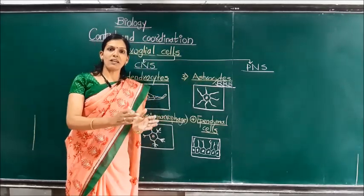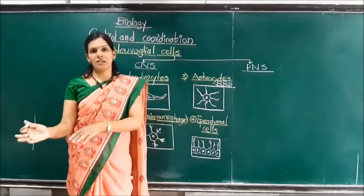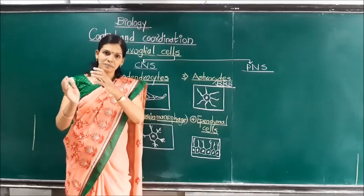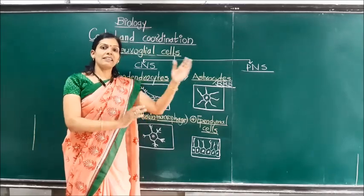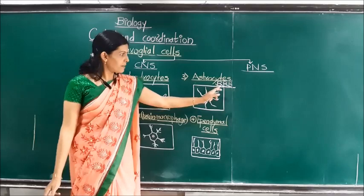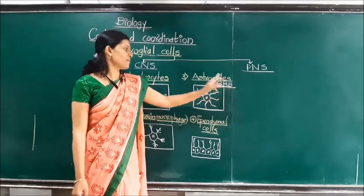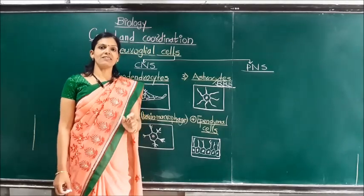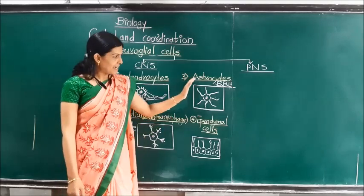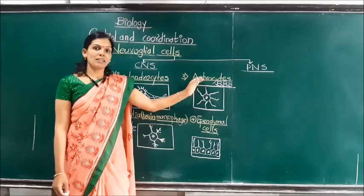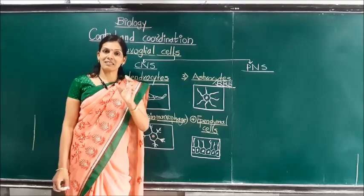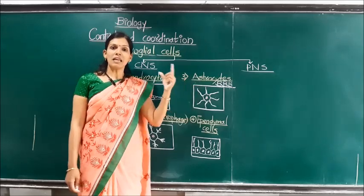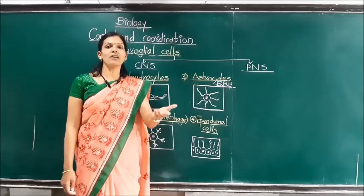Through the blood-brain barrier, nutrients are collected from the blood and astrocytes provide that nutrition to the brain. In return, waste products from the brain such as carbon dioxide or ammonia are collected and transferred to the blood. Astrocytes also perform another function: the secretion and regulation of neurotransmitters, which help in the transmission of nerve impulses — either electrical or chemical.